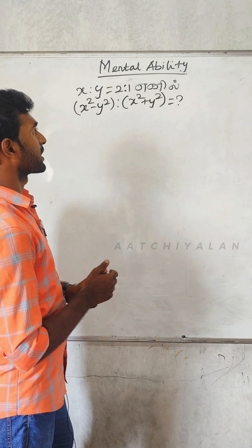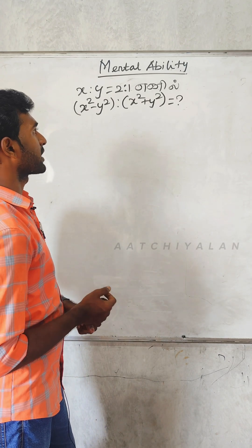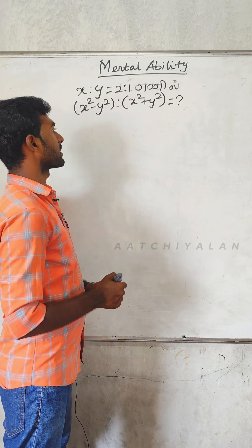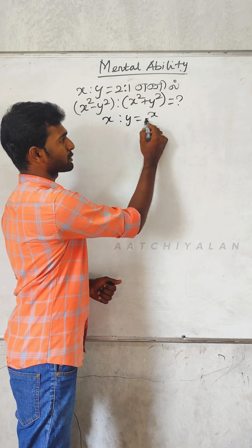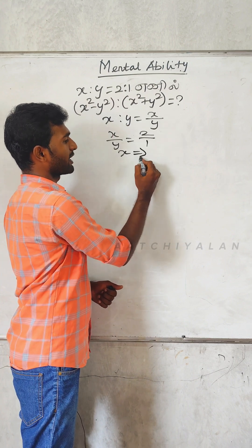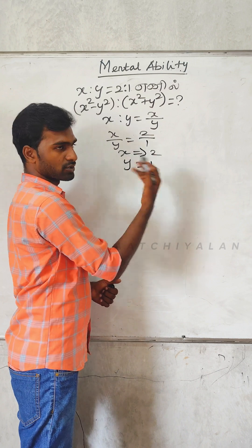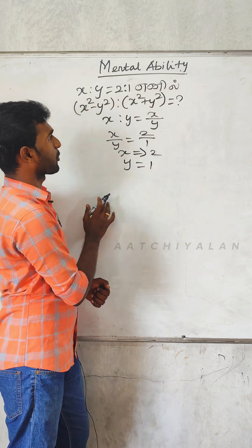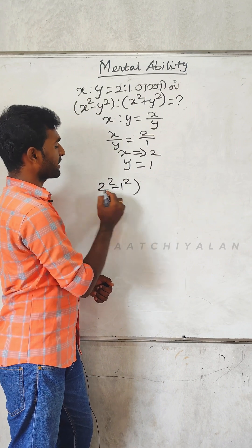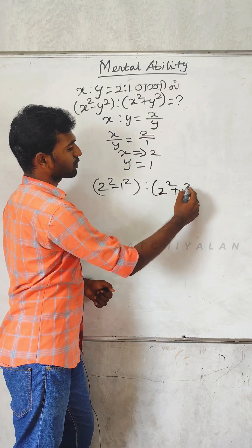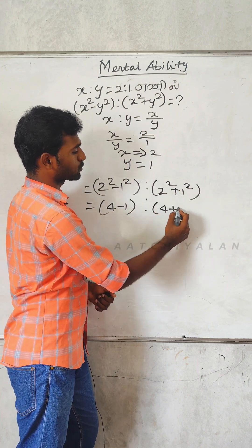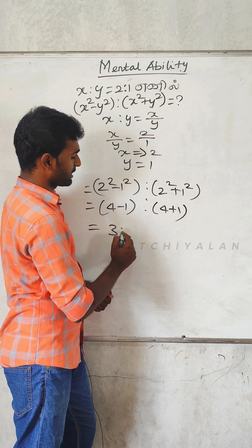x is to y is equal to 2 is to 1. x² minus y² is to x² plus y². This is the reason and proof of the question. x is to y is equal to 2 by 1, so x by y is equal to 2 by 1. x is equal to 2, y is equal to 1. So x² minus y² is to x² plus y² equals 2² minus 1² is to 2² plus 1². 4 minus 1 is to 4 plus 1. So the answer is 3 is to 5.